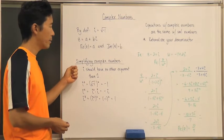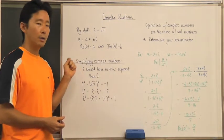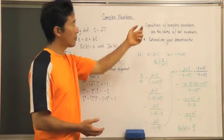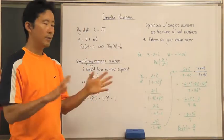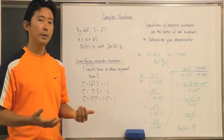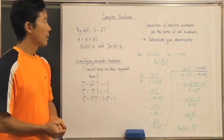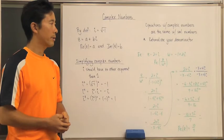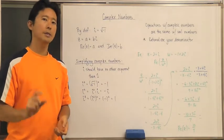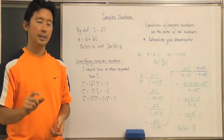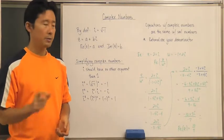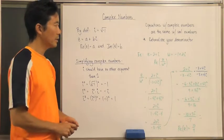Operations with complex numbers work the same as real number algebraic operations. The one thing to remember is to rationalize your denominator: if you see an i in the denominator, multiply by the conjugate, because the imaginary unit is a radical and we don't want radicals in the denominator.